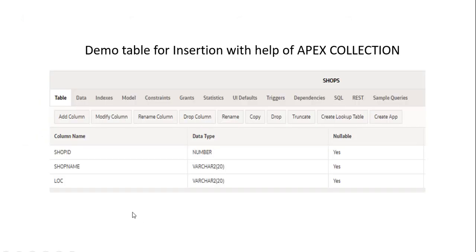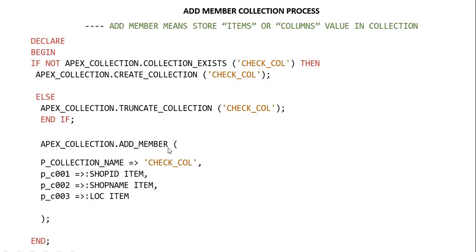Just like the demo table for insertion: this is my table — shops — with columns shop_id, shop_name, and location. So let's start the demo. First, we create this table in your APEX schema; we have already created this table in the APEX workspace. Now, add member collection process — add member means storing item or column values in a collection.